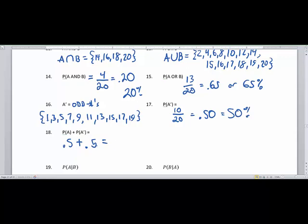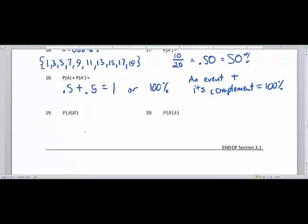So that means that these two probabilities add up to be 1 or 100%. And this brings in the true statement that an event plus its complement equals 100% probability. So the probability of an event and its complement is 100% probability, or an event and its complement is 100% of the outcomes.